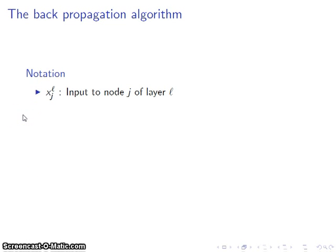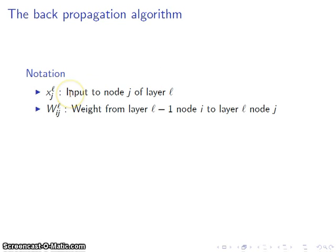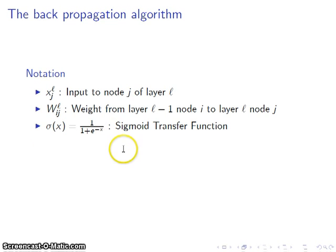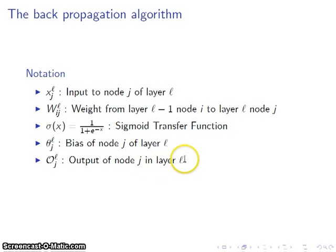So we're going to need some notation to develop this backpropagation algorithm. We're going to use x sub j to be the input to the jth node of the layer we're concerned with, which I denote with script L. Capital W sub ij is going to be the weight from the previous layer node number i to the current layer node number j. Sigma, for our purposes, we're just going to use the sigmoid transfer function. Theta sub j is the bias of the jth node in the layer we're concerned with. And script O sub j will be the output of the jth node in the layer we're looking at.